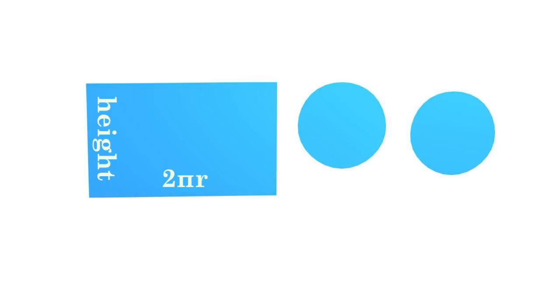These two end circles have an area equal to π times the radius of the cylinder squared. Altogether, the area of these shapes gives us the surface area of the cylinder.